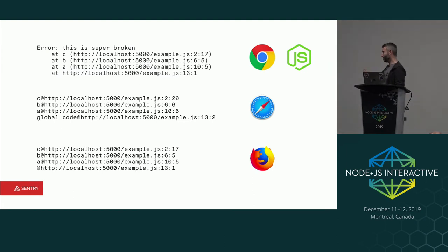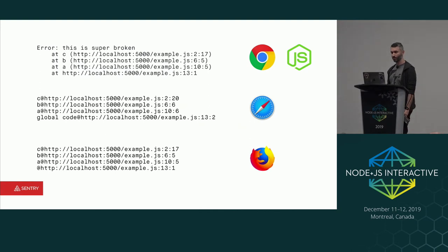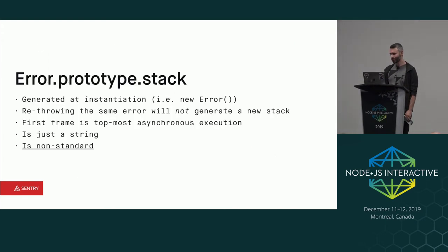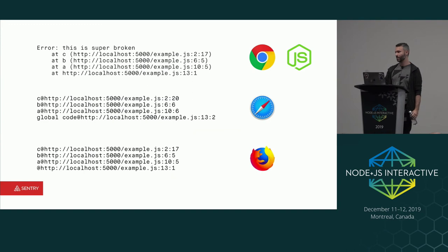If you're doing error reporting and want to group different errors together, you have to do a whole bunch of regex massaging. Stack property key takeaways: it's generated at instantiation. Re-throwing the same error will not generate a new stack trace, but creating a new error obviously will. The first frame is the topmost asynchronous execution. And it's just a string — not some clever array you can manipulate — it's just all string data, and it's non-standard.